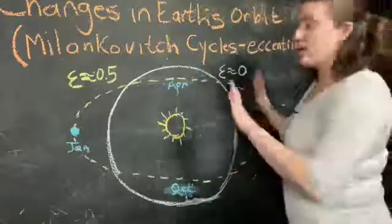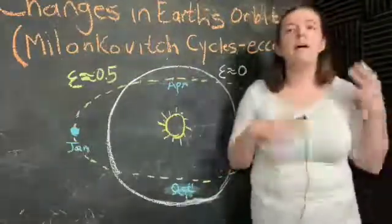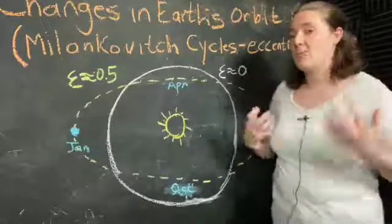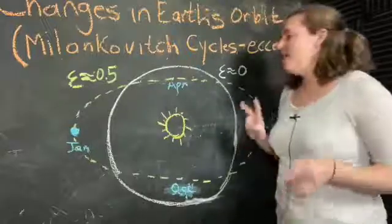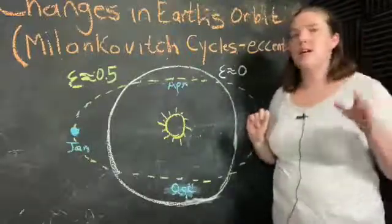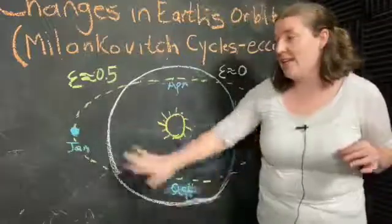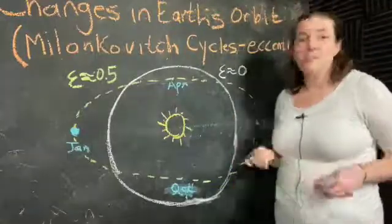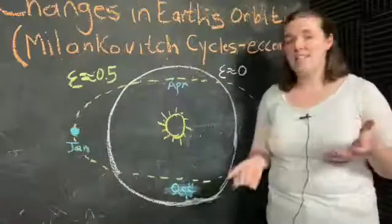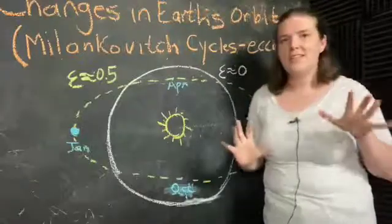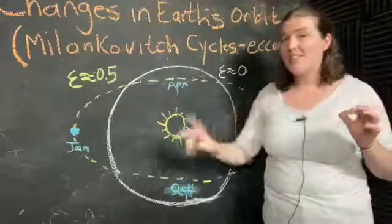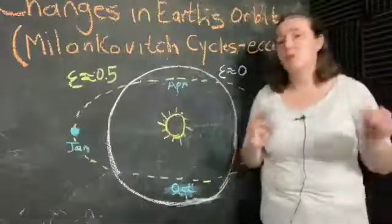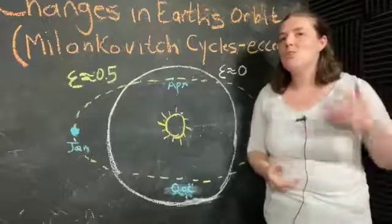We're never going to look like this green thing that I drew, but it can help us understand what's going on, having the more exaggerated picture. Right now, the Earth is actually closer to the sun by about 3 million miles in January than it is in July. That's a non-trivial difference. Even with such a small eccentricity of about 0.016, the Earth is still closer to the sun in January than in July. It's actually a difference of about 3 million kilometers. That's quite a bit.